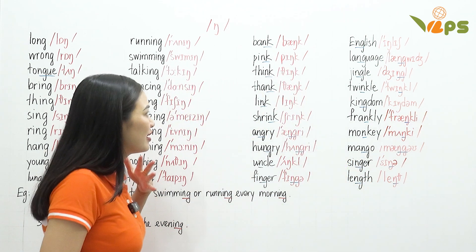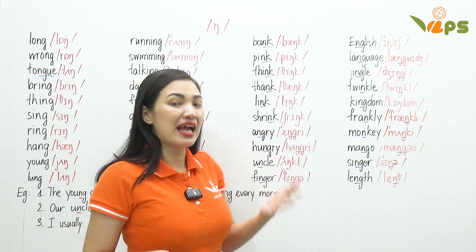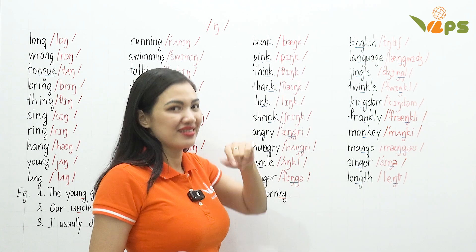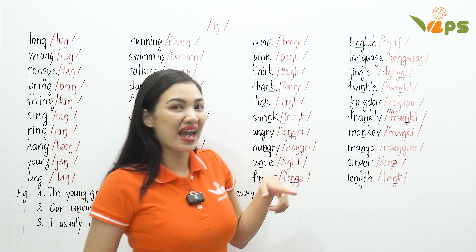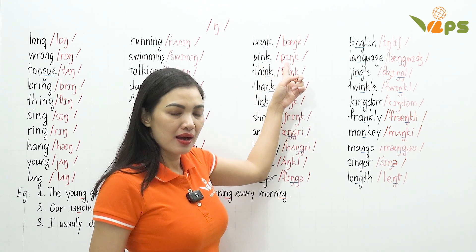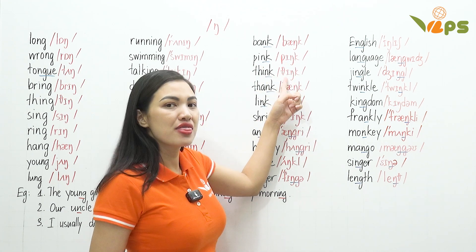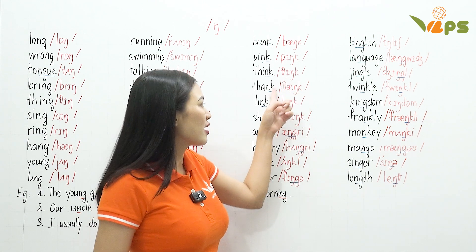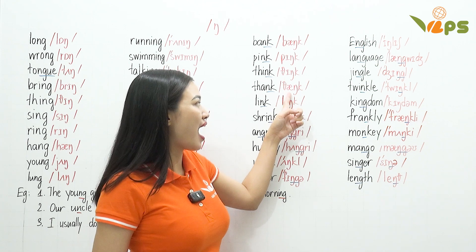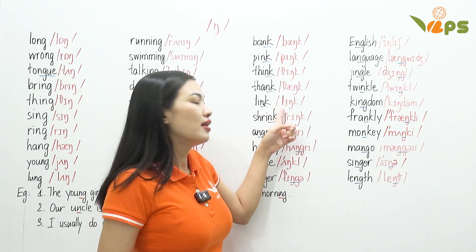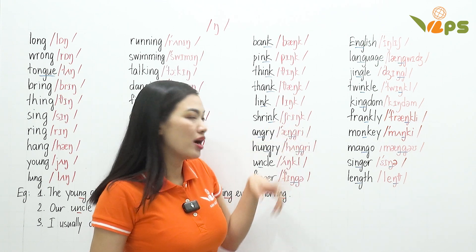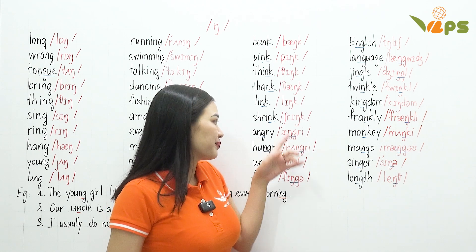For the third column, as you can see, N and K together — we usually pronounce an NK sound. So: bank, pink, think, thank — N and K. And: link, shrink.